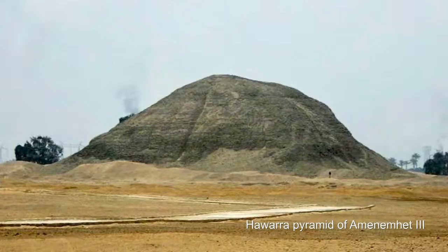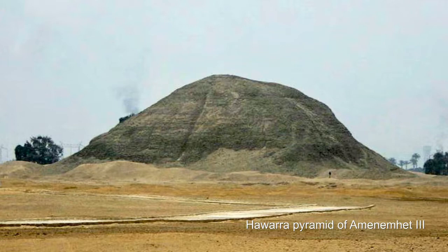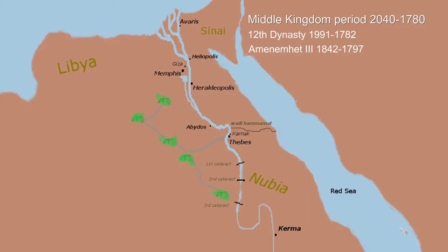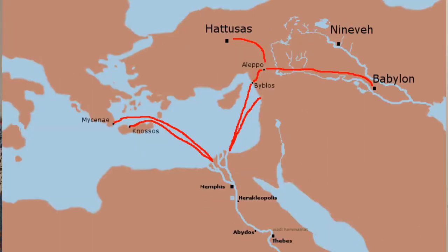So Amenemhat the Third built a second pyramid, which is very famous — it has trap doors, false passages, false ceilings, and all kinds of innovative designs to hide the location of the tomb. Outside the pyramid there is also a very large labyrinth which became very famous during Hellenistic times when the Greeks ruled Egypt. Amenemhat the Third also made his son Amenemhat the Fourth co-regent before he died. Amenemhat the Fourth strengthened trade along the Mediterranean Sea with the Mycenaeans, the Minoans, Lebanon, and Byblos.